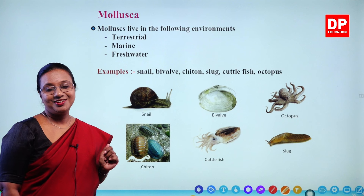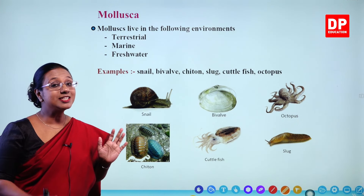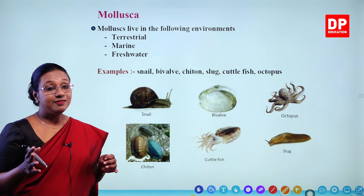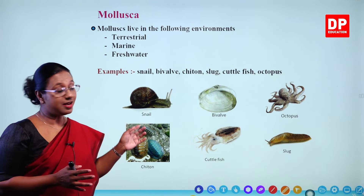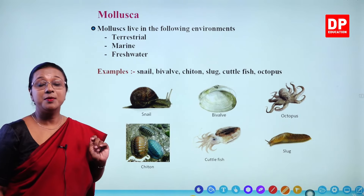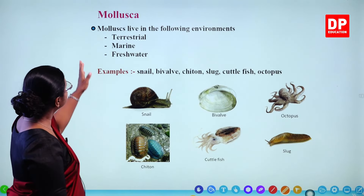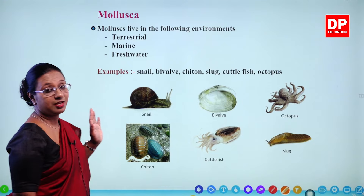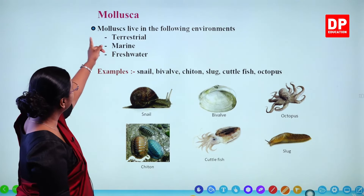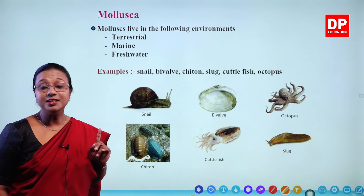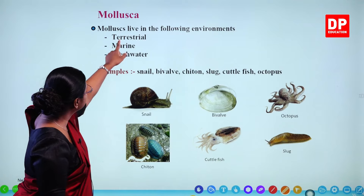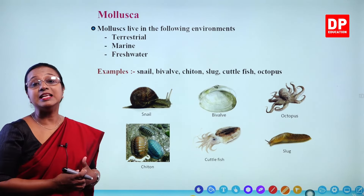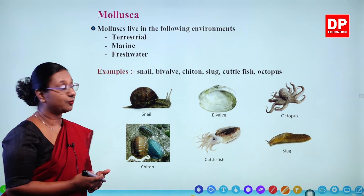Insects are the arthropods that can fly — they have wings. Butterfly has wings with different patterns and colors that are very beautiful. Those are arthropods that are insects. The arthropods that can fly usually come under insects. Then there is the spider.